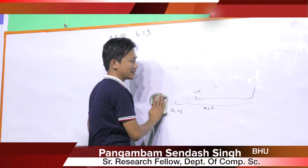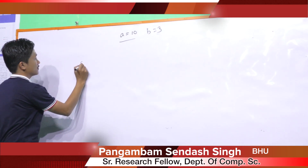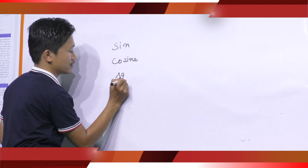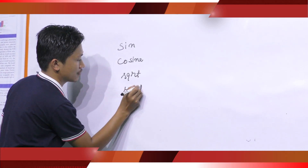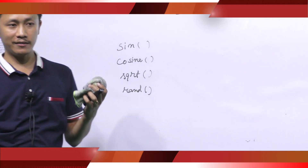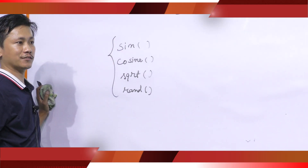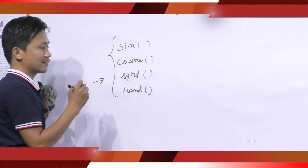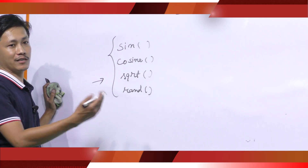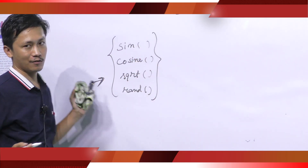Besides these operators, C provides various library functions like sine, cosine, square root, and random. Besides all those built-in functions, C provides various library functions which will be used in various mathematical calculations. These functions are not actually a part of C; however, most C implementations include them as library functions. For a complete list of these functions, you have to consult a reference book.